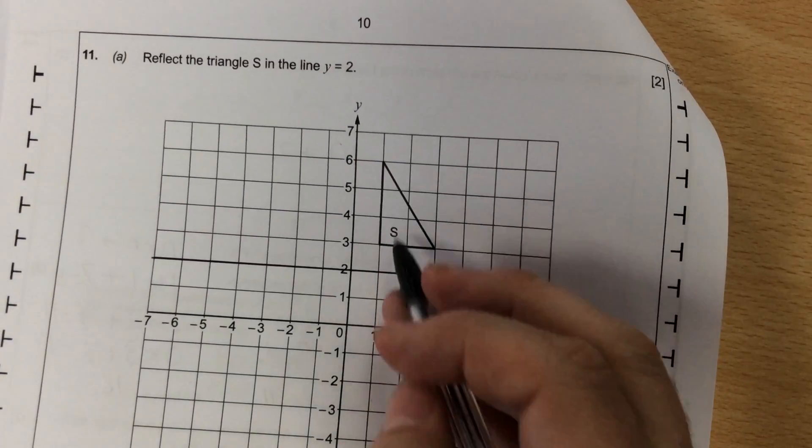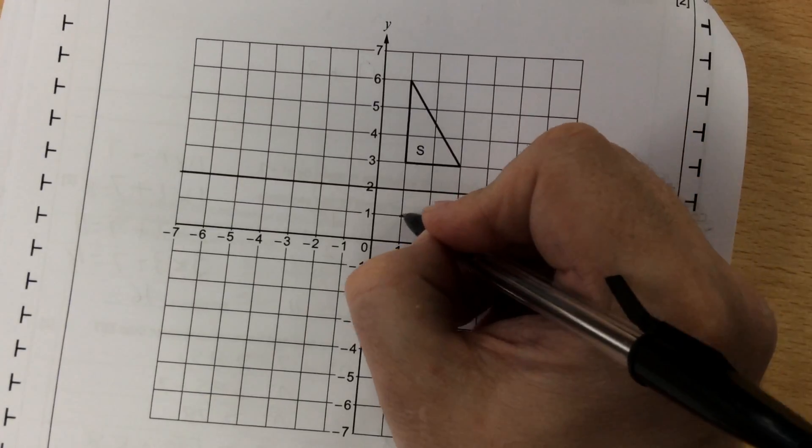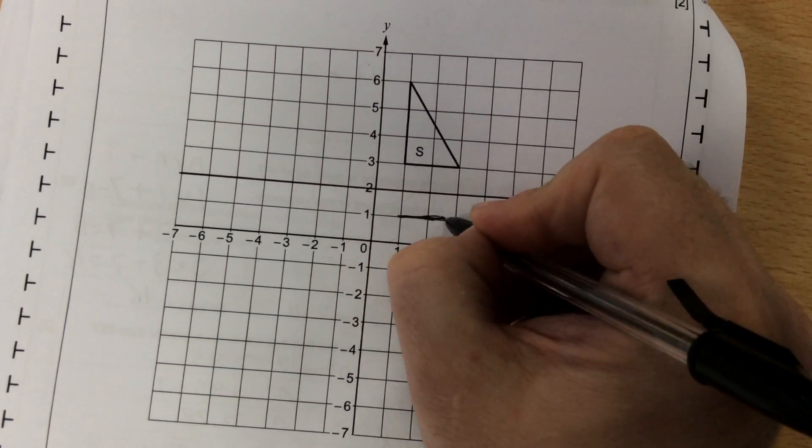If that's our mirror line, we're reflecting this below. Because that's 1 square above, we now leave a gap of 1 and draw our line, which is 2 across.